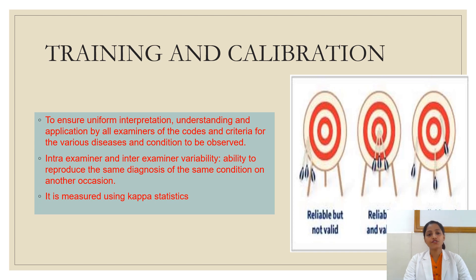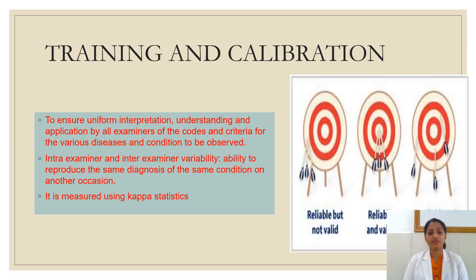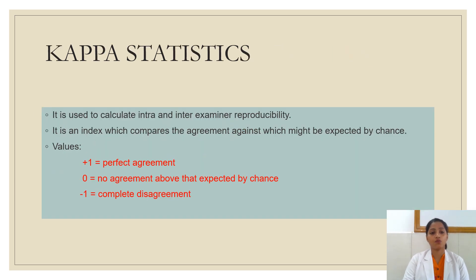When it comes to training and calibrating examiners prior to conducting a survey, certain steps must be followed. Training and calibration is conducted using various methods, which include intra-examiner and inter-examiner reliability and variability, carried out at various settings and intervals. It is measured by Kappa statistics. When the Kappa statistics value is close to 1, it shows perfect agreement. When it is close to minus 1, it shows complete disagreement, in which case the examiner reproducibility and validity is very low and should be repeated.